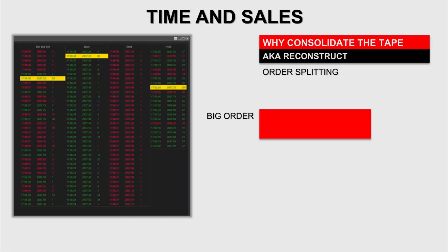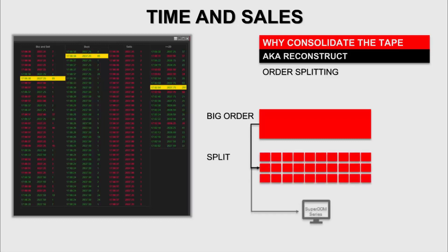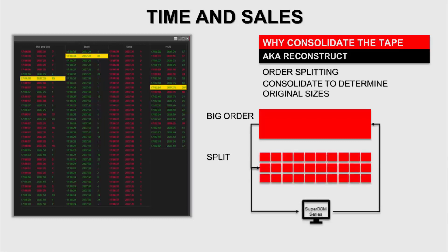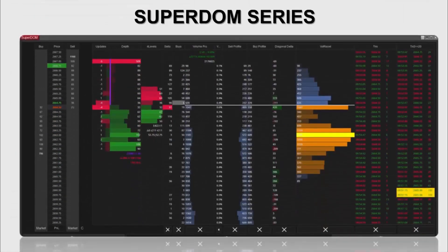What we're trying to do by consolidating the tape — by reconstructing the tape — is match the incoming order flow and consolidate the smaller trades that were split, in order to gauge the original size of the order. By consolidating these smaller orders, we're trying to determine and track the original sizes and evaluate what kind of traders are participating. That's why, even after MDP 3.0 protocol was implemented, we still need to reconstruct the tape.